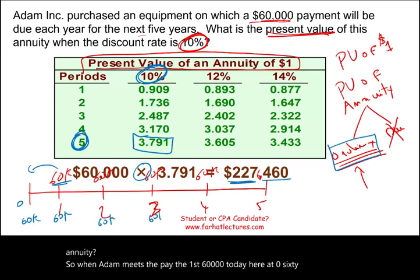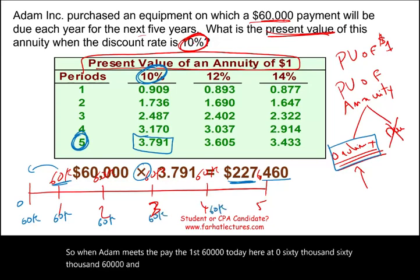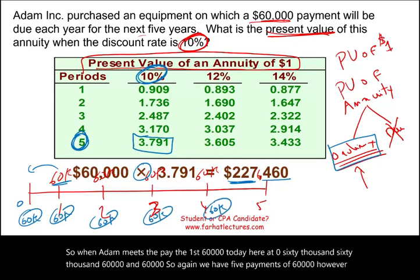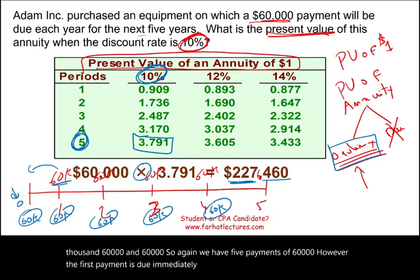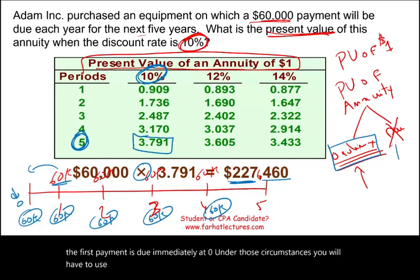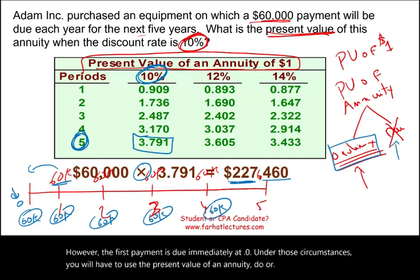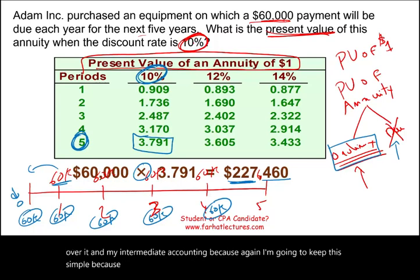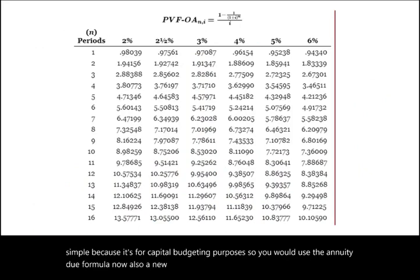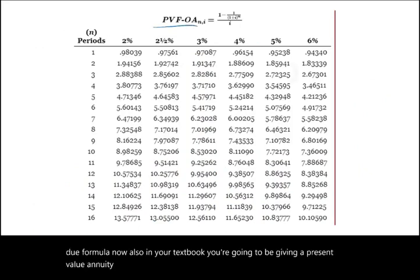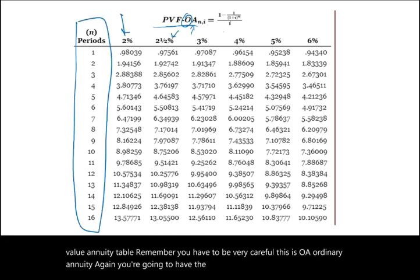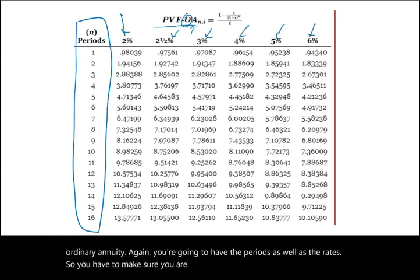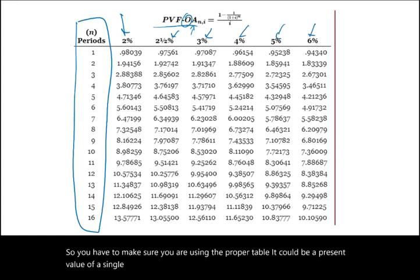We can take each 60,000 and find the present value separately, or go to the present value table. We know we have five payments at a 10% interest rate. Five periods and 10% intersect at the factor 3.791. Take $60,000 times 3.791, and the present value of the payments is $227,460. This is an ordinary annuity. An annuity due is when Adam needs to pay the first $60,000 today at point zero, so five payments of 60,000 but the first is due immediately. Under those circumstances you use the present value of an annuity due formula. I cover that in my intermediate accounting course since we're keeping this simple for capital budgeting purposes.